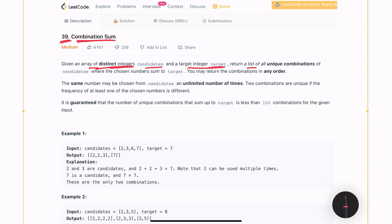We need to return all the unique combinations of the candidates where the total of all of the numbers is equal to the target. We can return the combination in any order.